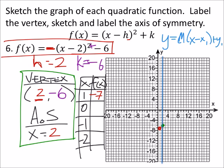So I've got 1 and negative 7 right here. When X is 0, then I've got negative 2 squared, which is 4. Negative 4 minus 6 is negative 10. Ooh, where is that? Right there. Sorry, it's a negative 10.